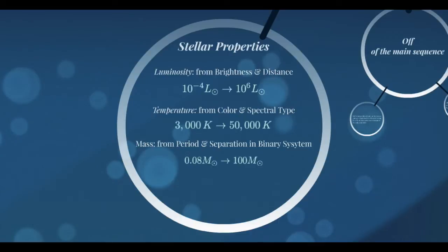Looking at the ranges we find in stellar properties: luminosity, gathered from brightness and distance, can range from one ten-thousandth to a million times the Sun's luminosity. Temperature, derived from color and spectral type, ranges from about 3,000 Kelvin to 50,000 Kelvin — this is the surface temperature of the photosphere. Mass, measured from the period and separation in binary star systems, ranges from 8% to 100 times the mass of the Sun.